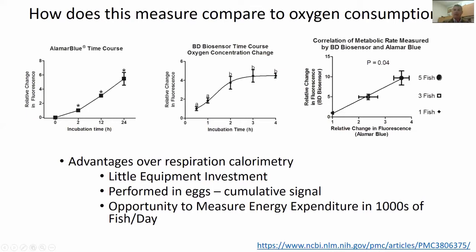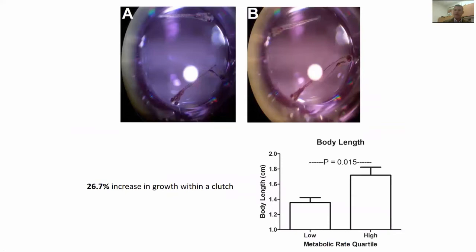The assay can be performed in eggs. Because the signal accumulates over time, we can measure even a small metabolic rate and see large differences. We have the opportunity to measure energy expenditure in thousands of fish per day — in my lab we measure about 2,500 fish per person per day. We plate fish into 96-well plates — about three inches by five inches — with one fish per well, measuring the metabolic rate of each fish individually.